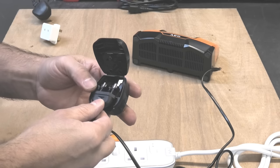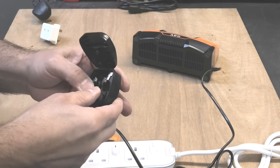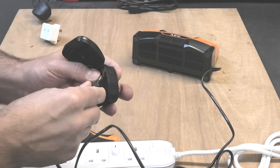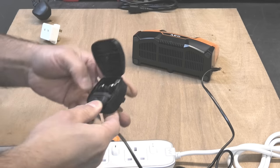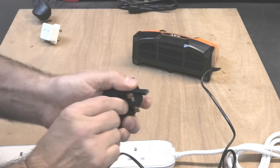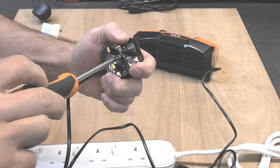You simply take that, push it into there ensuring that the terminals are in correctly. Once that's in there you simply close the cover and tighten up the screw.